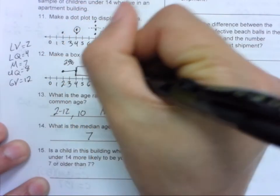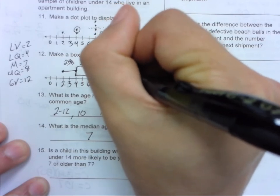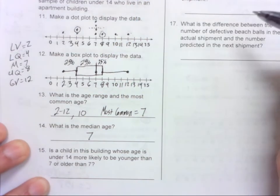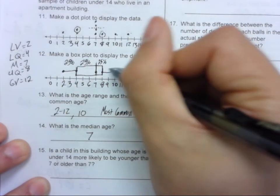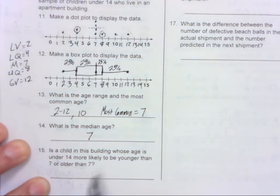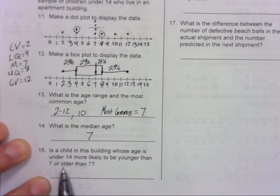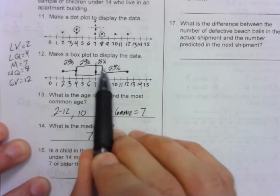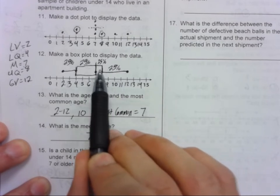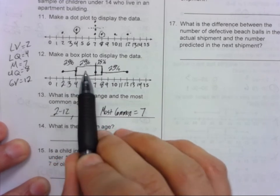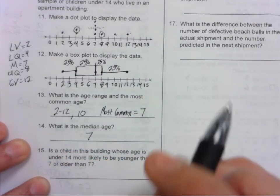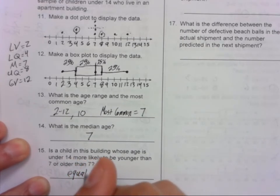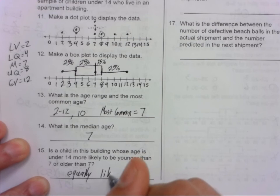25% of the data there. 25% of the data there. In this tiny little spot, there's still 25% of the data. And then this whisker has 25% of the data. So is it more likely to be younger or older than 7? Well, 7, how much of the data is older? 2 sections. So that's 50%. How much of the data is younger? 2 sections. That is 50%. So what's more likely? Well, they're both 50%. So they are equally likely.